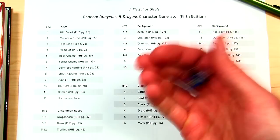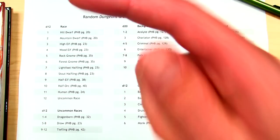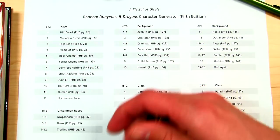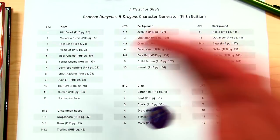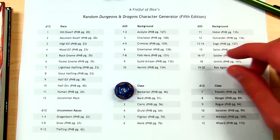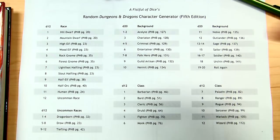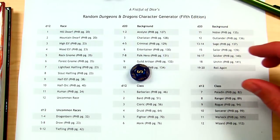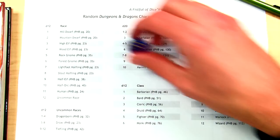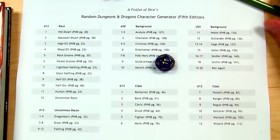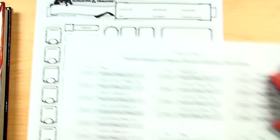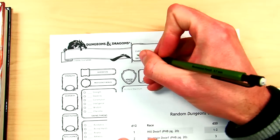I'm going to roll, ruling out dwarfs and gnomes since I've already made characters with those — I want a little variety. I got a 2, mountain dwarf, so I'll try again. Got a 5, rock gnome. Try again — 11, a human. Third time's the charm! So race is going to be human.